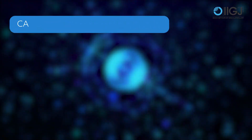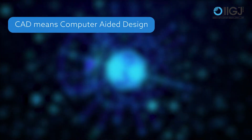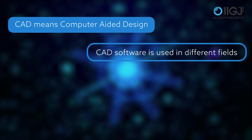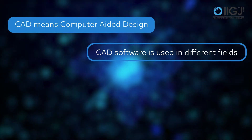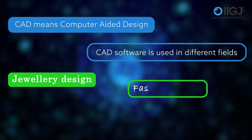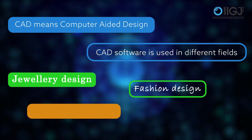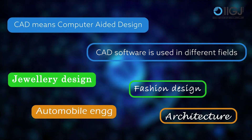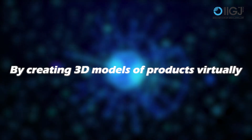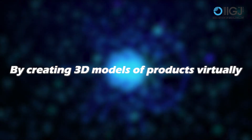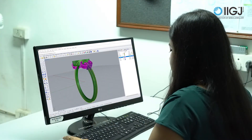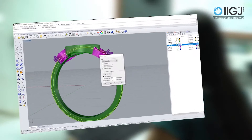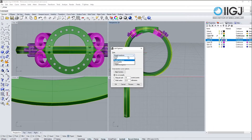What is CAD? CAD means computer-aided designing. A CAD software is used in different fields such as jewelry, fashion designing, automobile engineering, architecture, etc., by creating 3D models of products virtually. CAD models help to save time, labor, and money in the production process.